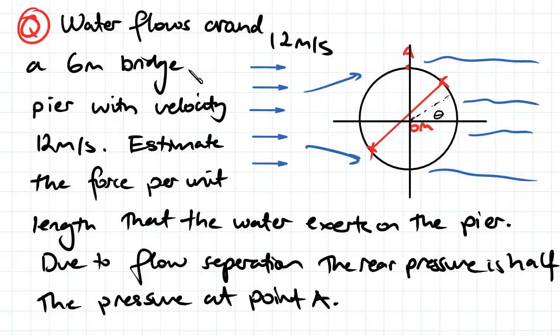So water flows around a 6m bridge pier with velocity 12 m/s. We've got a diameter of 6m here and we've got our velocity of our uniform flow being 12 m/s.